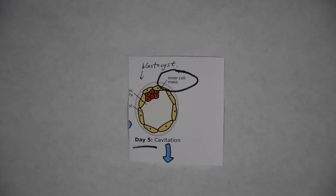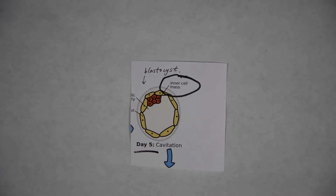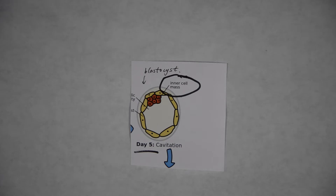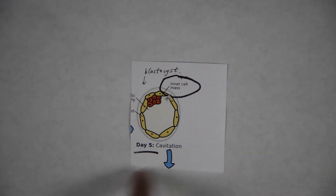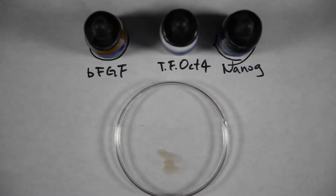Now I'm going to make an analogy between this embryo and M&M candies. When the scientists crop this embryo out, they will be left with a bottle full of M&Ms. Before the inner cell mass is extracted from the embryo,